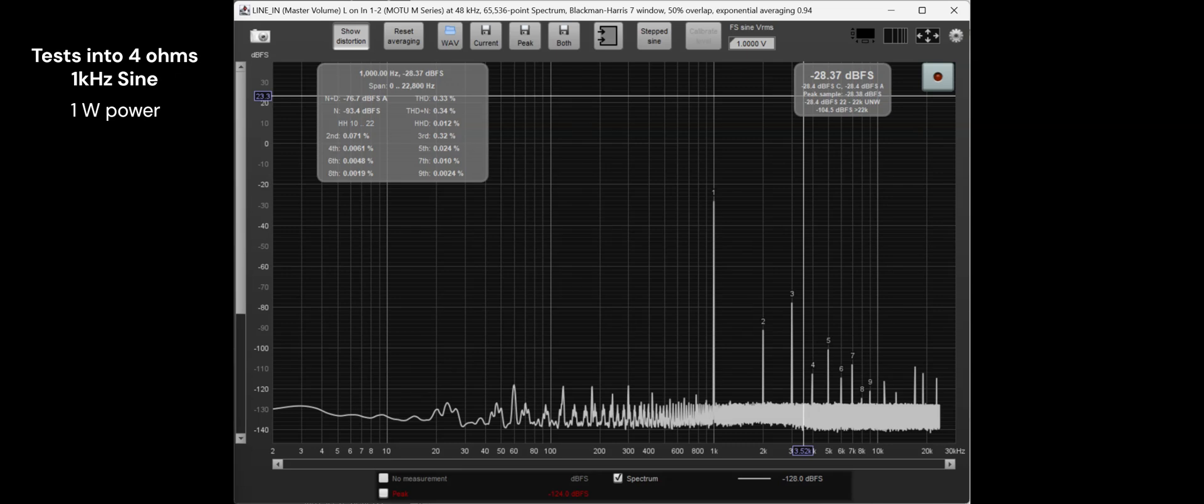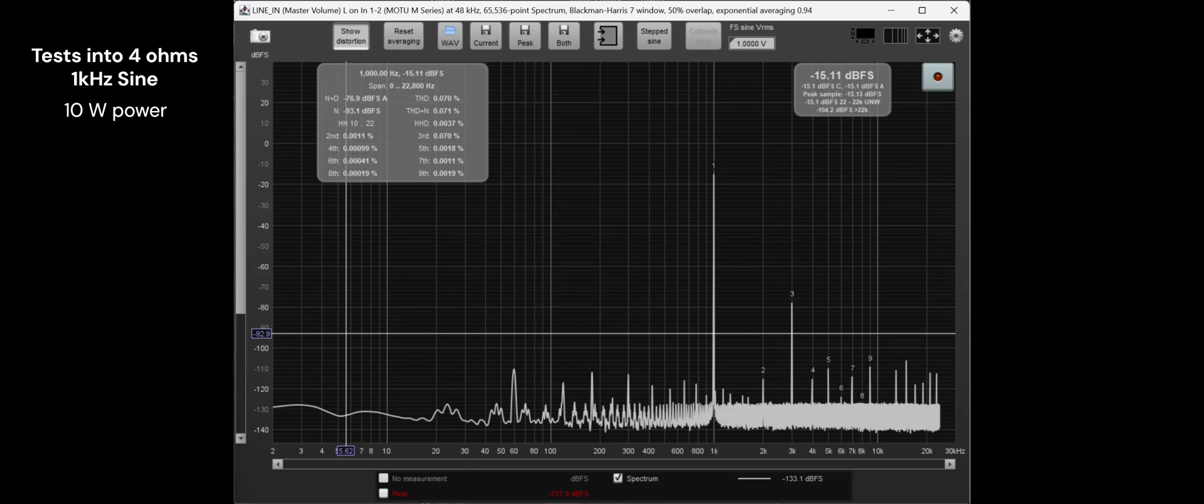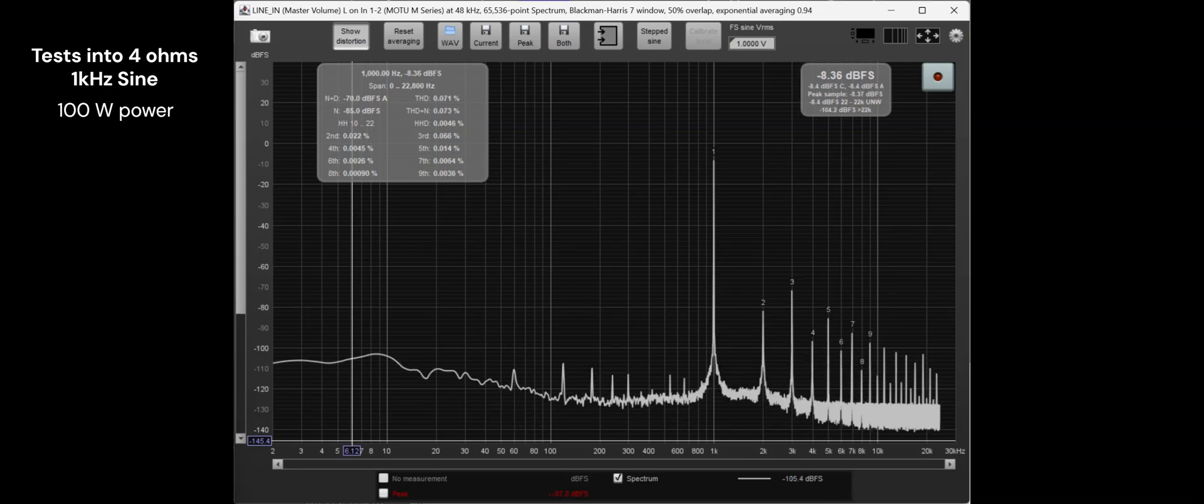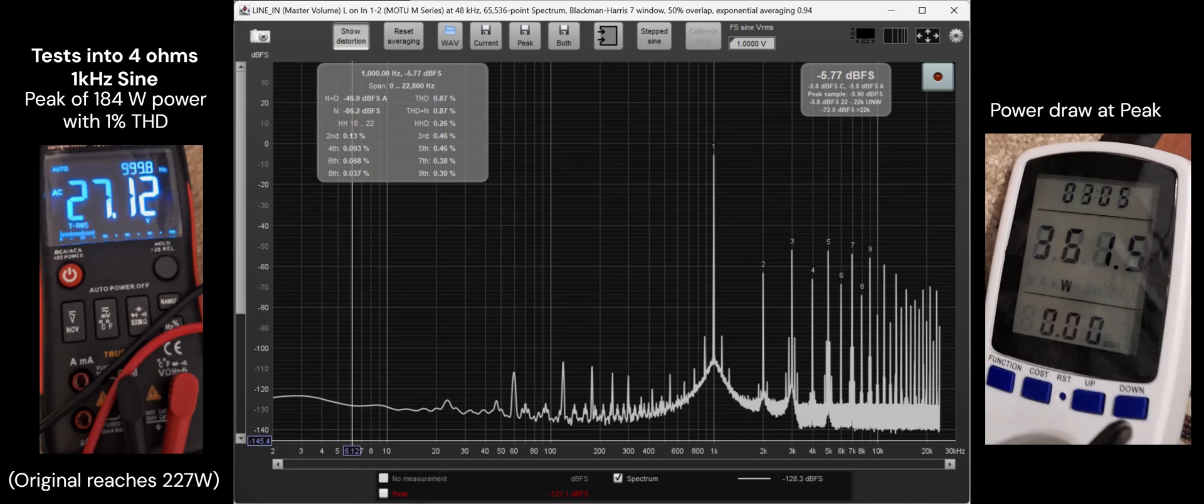Further testing was again continued with this new bias setting at a 4 ohm load. In this case, there is mainly third order harmonic distortion. The peak power that could be achieved with one channel driven was 184 watts, which is below the 227 watts of the original. Again, this may be an indication the design is limited by the current of the transformers.